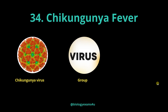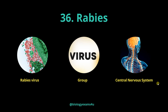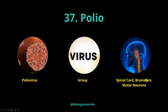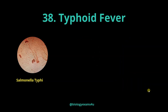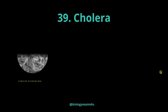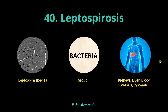Chikungunya fever is caused by chikungunya virus and affects joints, muscles and skin. Zika virus disease is caused by Zika virus and affects the nervous system, brain and fetus, also causing systemic infection. Rabies is caused by rabies virus and causes infection in the central nervous system. Polio is caused by poliovirus and infects the spinal cord, brain stem and motor neurons. Typhoid fever is caused by Salmonella typhi, a bacterium that infects the gastrointestinal tract — especially Peyer's patches — and also causes systemic infection at a later stage. Cholera is caused by Vibrio cholerae, a bacterium that primarily infects the small intestine. Leptospirosis is caused by Leptospira species, a bacterium; the sites of infection include the kidney, liver, blood vessels and it also causes systemic infection.